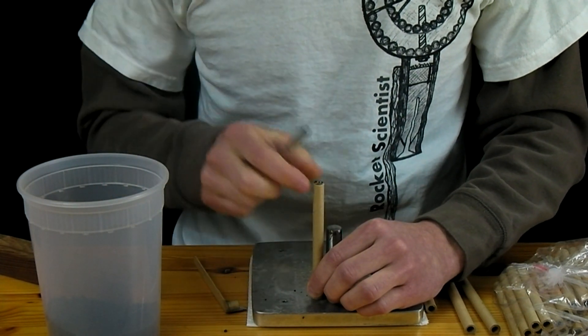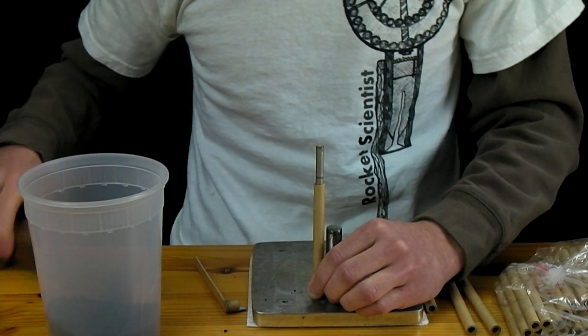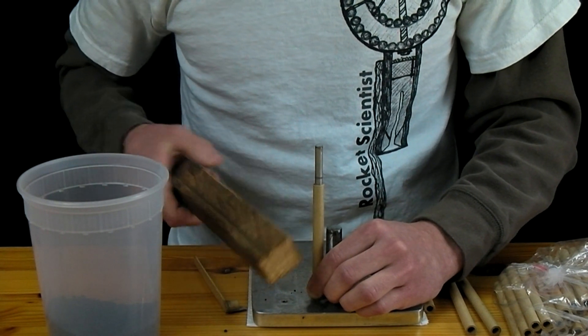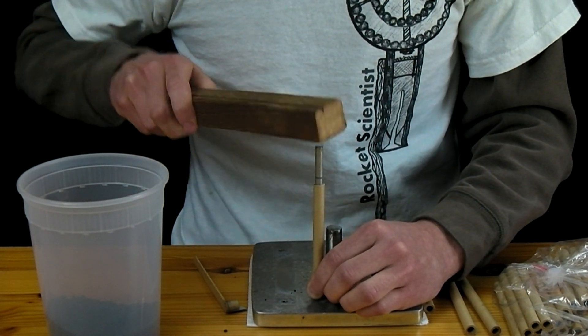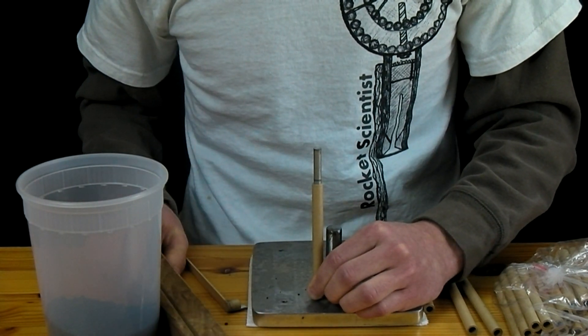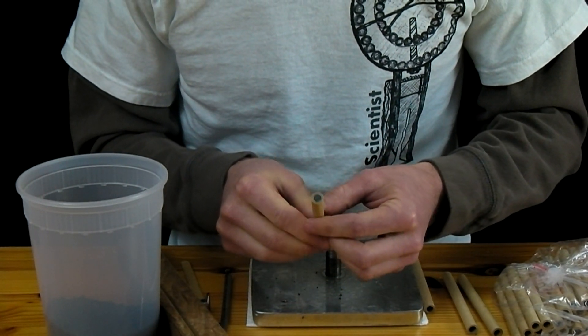Now for the first increment you have to keep the tube pressed down on the plate or the black powder will fall out of the end before it's compressed. Now with the black powder in the bottom under our ramrod here I'll just go ahead and take my bludgeoning object and give this a few solid hits. There it is. Pull this out and there's a nice solid surface on there.